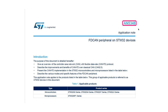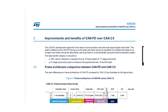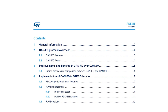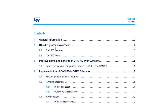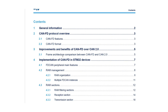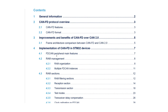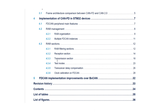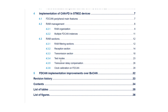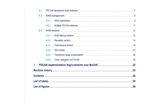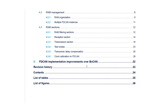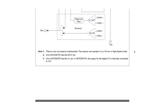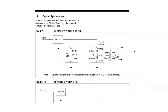Throughout the video series, application note 5348 will be referenced. This document contains information about CAN-FD protocol overview, frame architecture comparison to older CAN 2.0, FD-CAN main features, RAM management, RAM sections including filtering, reception, and transmission sections. The document also covers test modes, transceiver delay compensation, and clock calibration on the FD-CAN, as well as STM32 FD-CAN improvements over the older STM32 BX-CAN IP. For additional reference, take a look at the datasheet for the CAN-FD transceiver from Microchip.